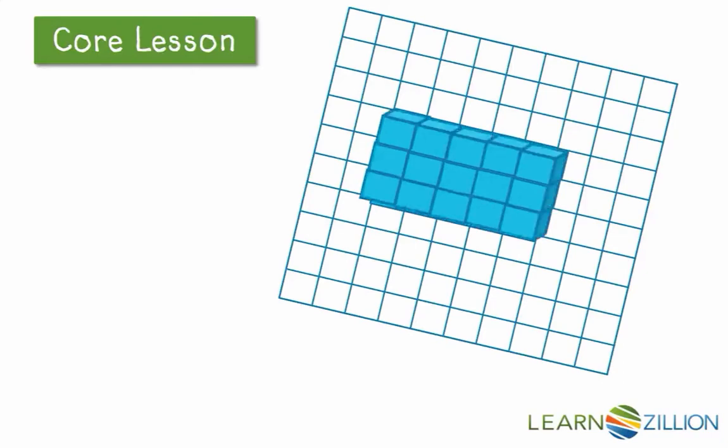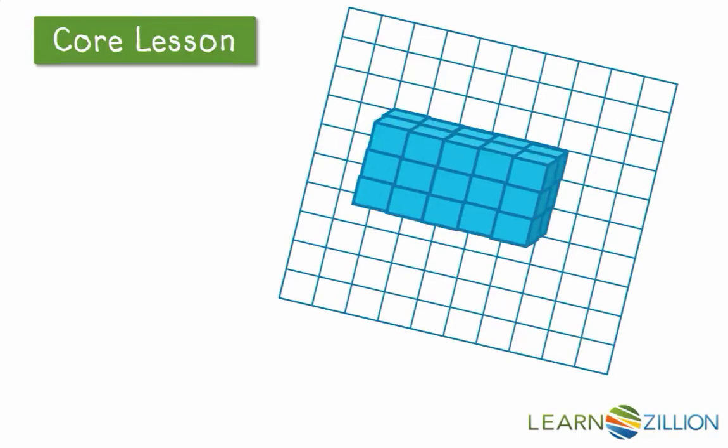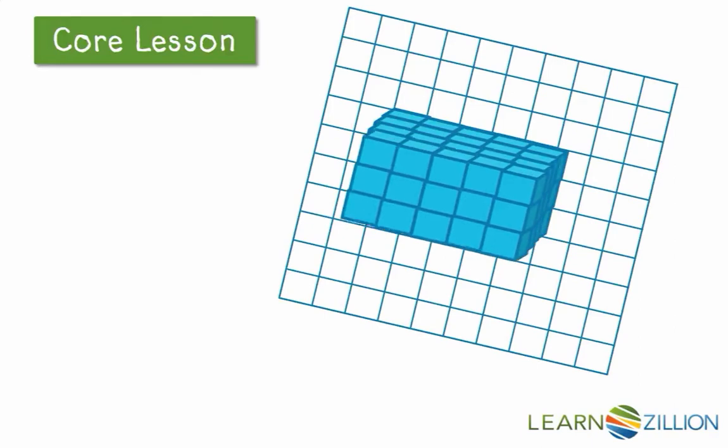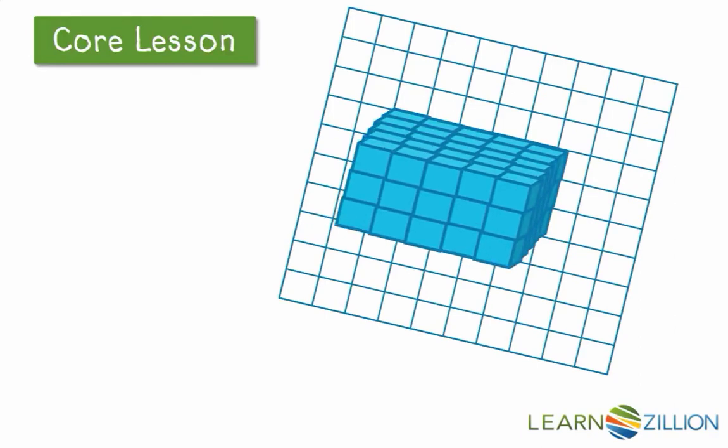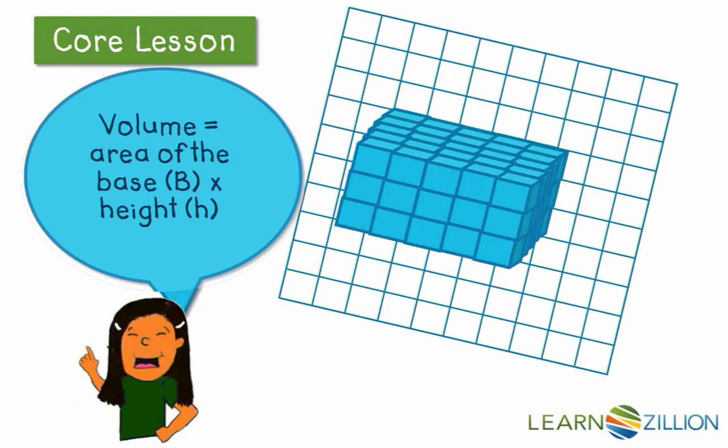Then if you stack 15 unit cubes on top of the base, you have the first layer of a rectangular prism with dimensions of 5 by 3 by 1. Now this prism has 5 layers high, so we would do the 15 cubes multiplied by the 5 layers. And then we know we could write the formula as multiplying the area of the base times the height. So that's another way to write the formula.